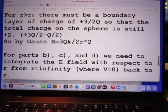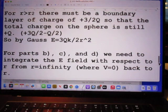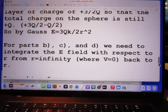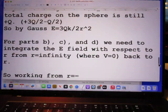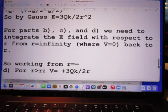For R larger than R2, there must be a boundary layer of charge plus 3 over 2Q, so that the total charge of the sphere is still plus Q. So, uses Gauss' law, this is the electric field.